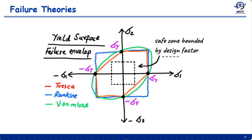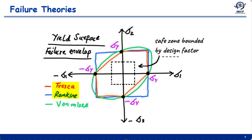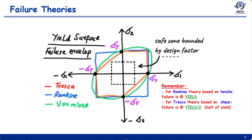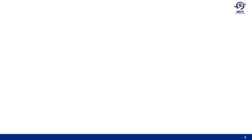The failure surfaces of these three theories are mapped on a graph. In the first and third quadrants, Tresca and Rankine theory are almost similar. In the second and fourth quadrants, the failure envelope of Rankine theory is far greater than the Tresca theory. The Von Mises surface is an ellipse circumscribing the hexagon of Tresca theory, so Tresca theory is the most conservative in terms of failure envelope. Codes often add a further safety factor, called a design factor, to these envelopes.